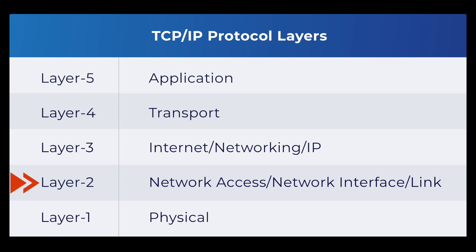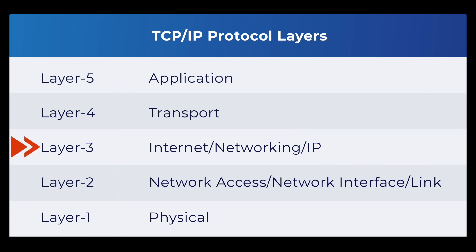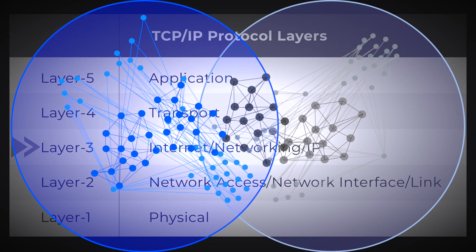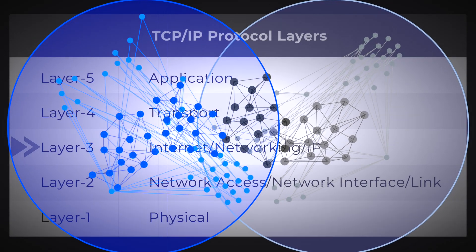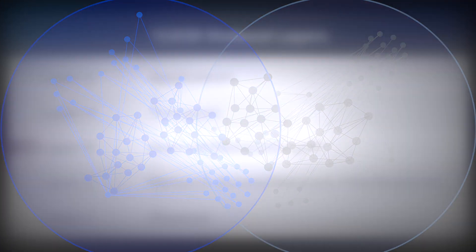The second layer is the network access layer. It is often called the network interface or link layer because it's where protocols interface with a local network and send a bucket of information from point to point. The third layer is the internet, or networking, or IP layer. It transports data buckets by connecting different independent networks and helps route your machine to another machine that you are not directly connected to.